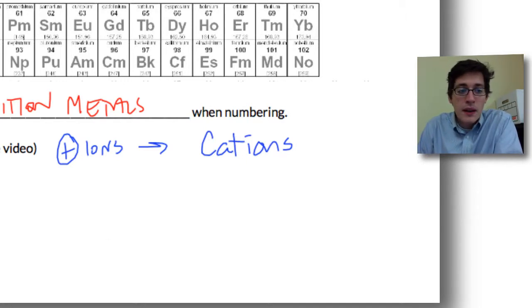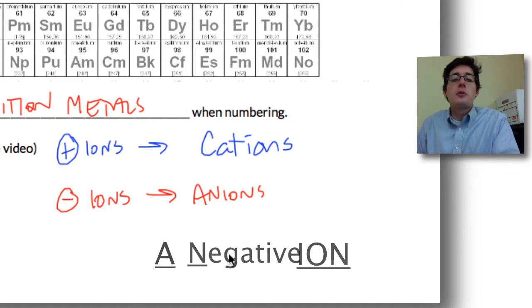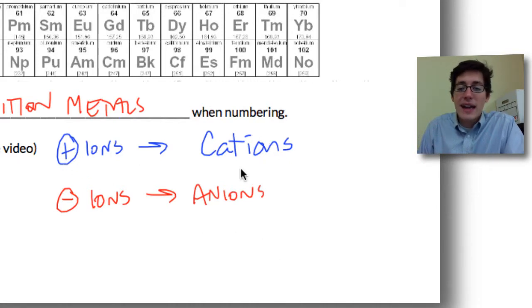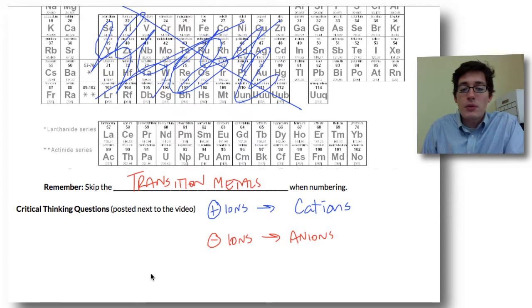Negative ions are called anions, A-N-I-O-N-S. This is like an acronym - it stands for A Negative ION. There's a couple little mind tricks to help you remember that. So again: positive ions are cations, negative ions are anions. Remember the T looks like a plus. That's it for ions from the periodic table. Critical thinking questions are now to the right of your screen, and you can use the space down here to fill in your questions.